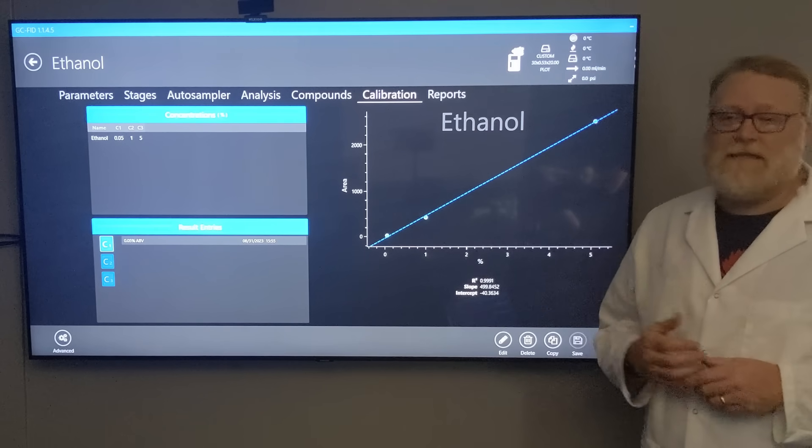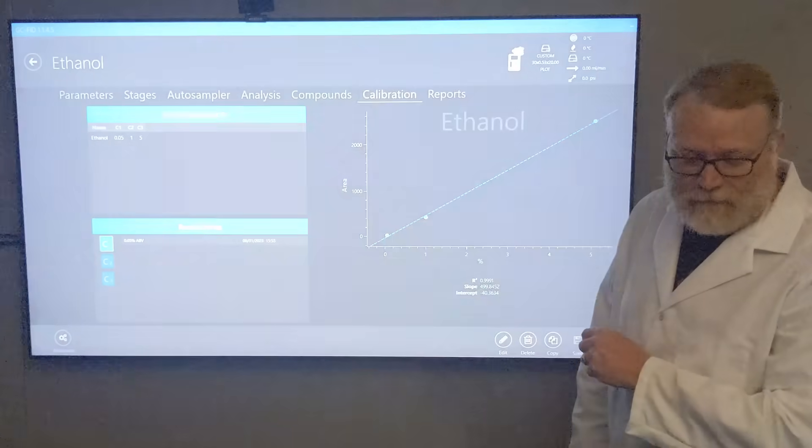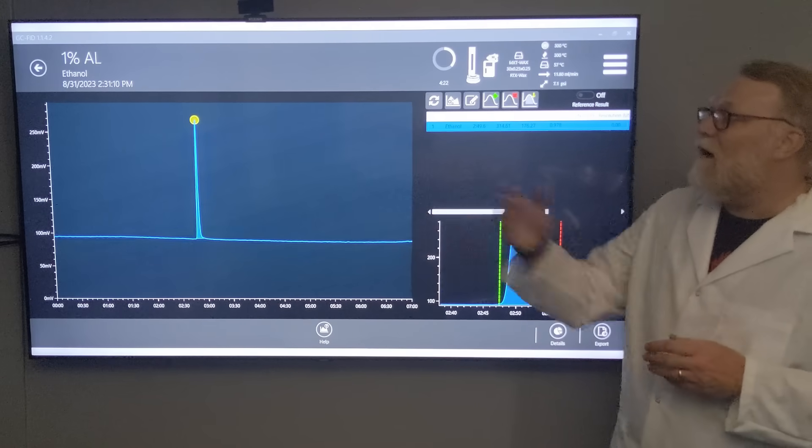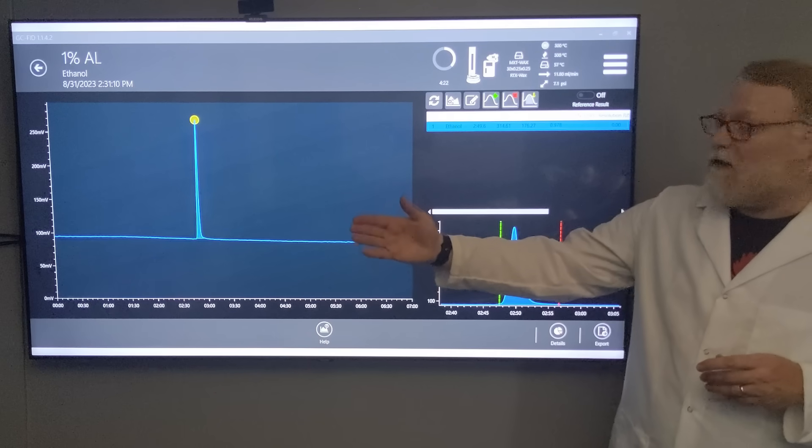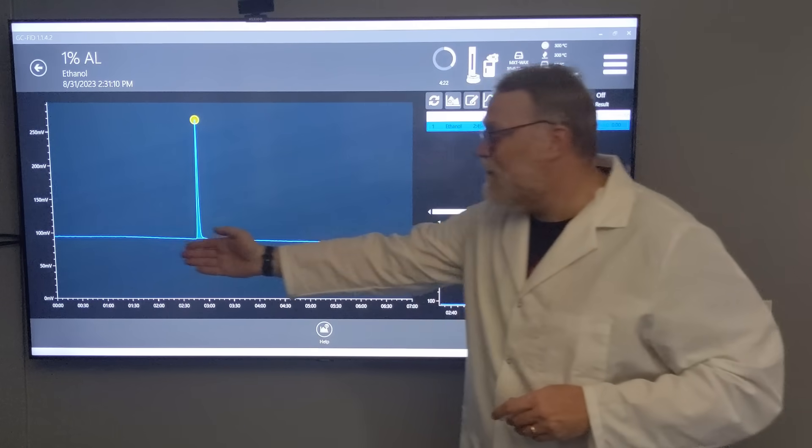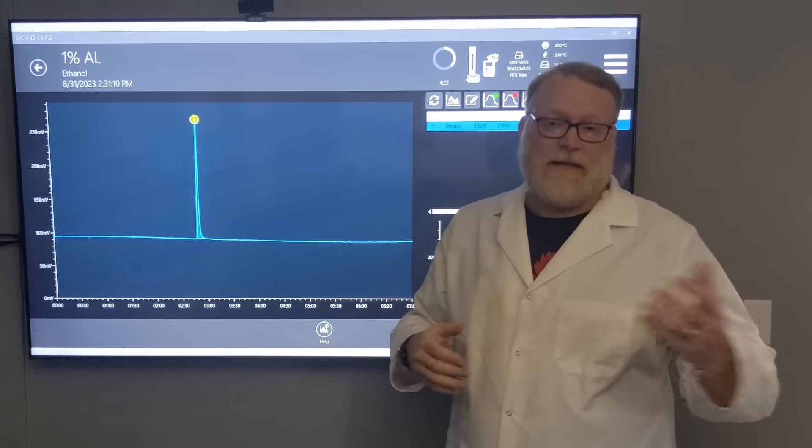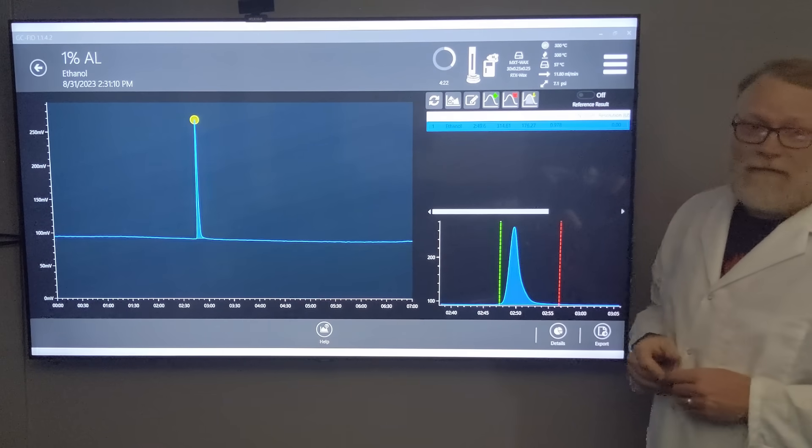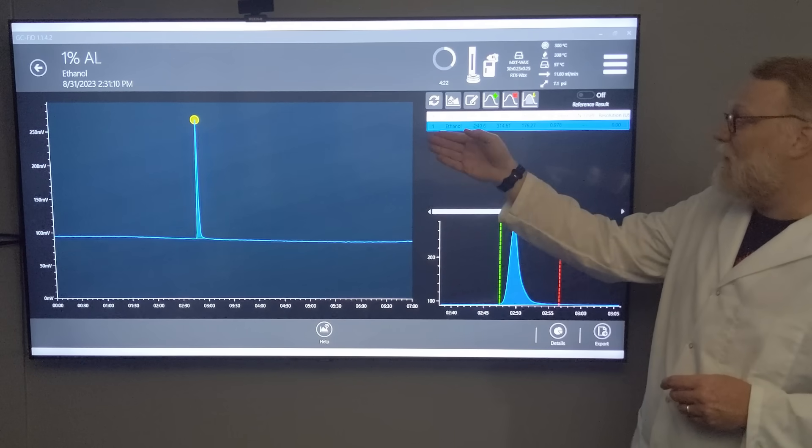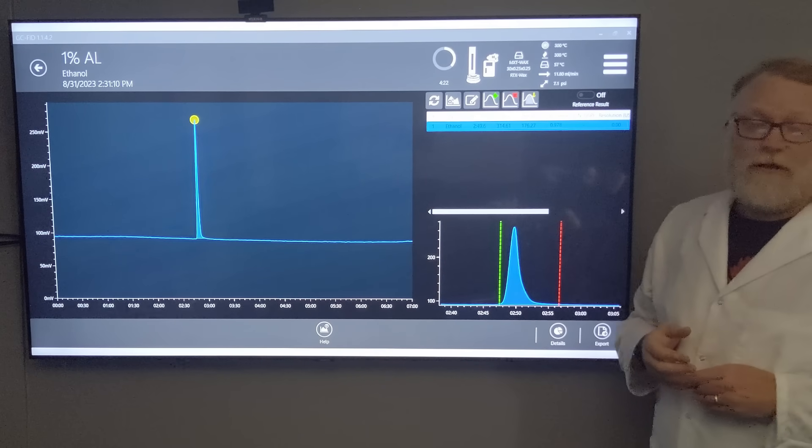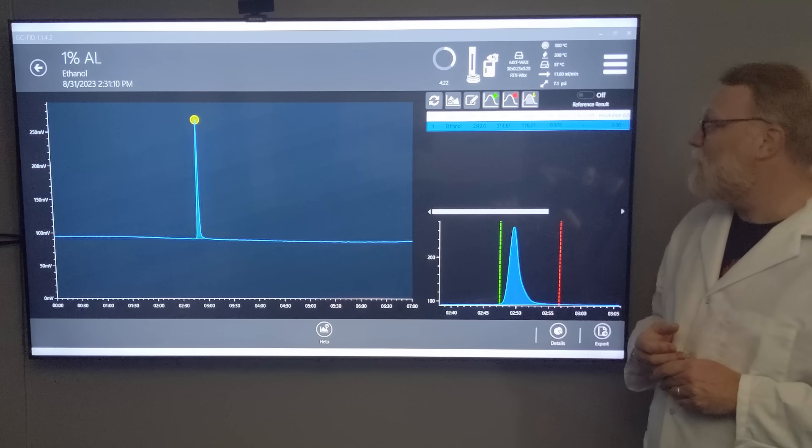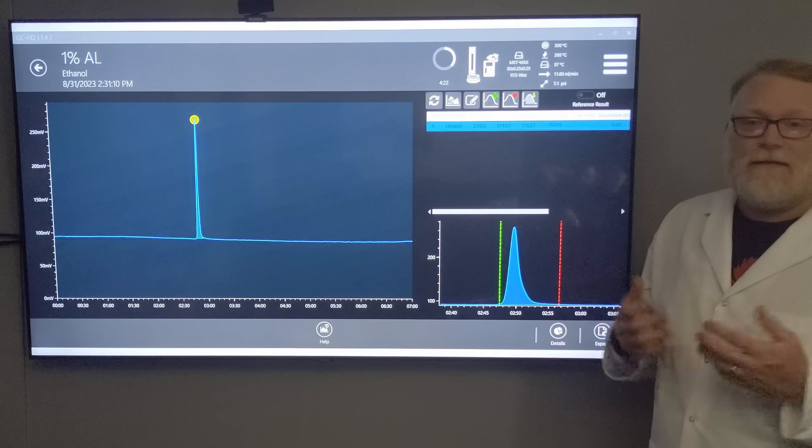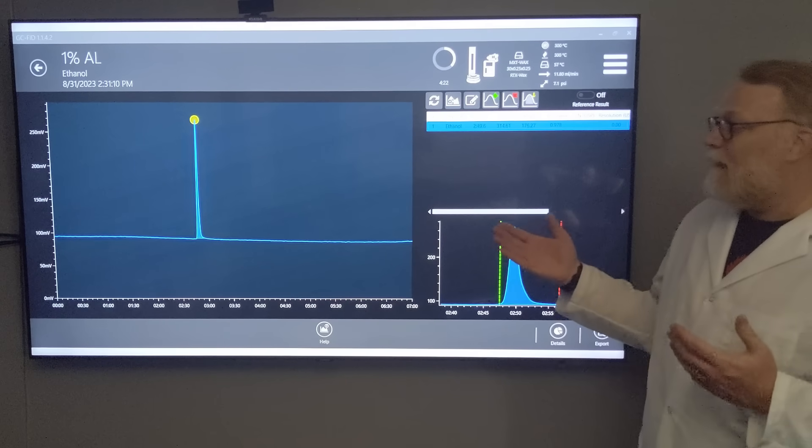Here I've done another injection of an American lager. It gives us a beautiful chromatogram. We know that's ethanol based on our standard - it comes out at the same point, and the software has labeled it as ethanol. It gives us an area of 314.61 and that gives us a concentration of 0.978%.